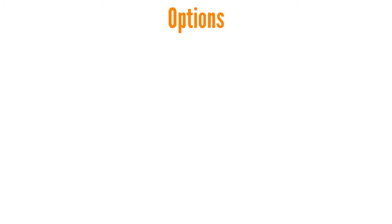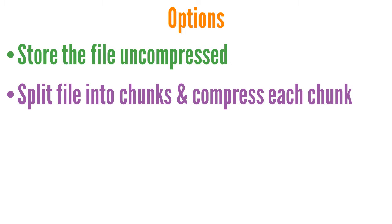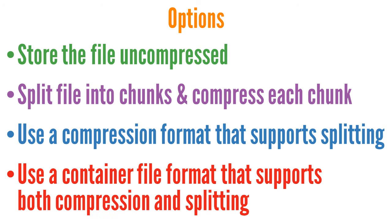Which compression format you use depends on considerations such as file size, format, and the tools you are using for processing. Here are some options arranged in order of least to most effective. The worst option is to store the file uncompressed. A better option is to split a file into chunks and compress each chunk separately using any supported compression format, but your compressed chunks should be approximately the size of an HDFS block. You can also use a compression format that supports splitting, such as BZIP2, though the trade-off is that it's slower than Snappy. The best option is to use a container file format that supports both compression and splitting — great examples are the Avro and Parquet file formats, using Snappy for fast compression and decompression.